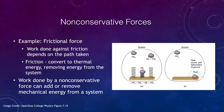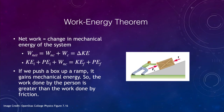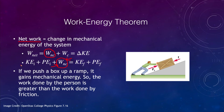Let's continue and look at the work-energy theorem and how we need to adjust it. The net work is the change in the mechanical energy of the system, and what we're adding now is non-conservative work. If there is a frictional force or air resistance, we need to consider that. So the work-energy theorem becomes: initial kinetic energy plus initial potential energy plus non-conservative work equals final kinetic energy plus final potential energy.